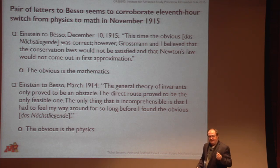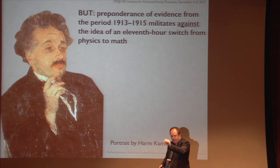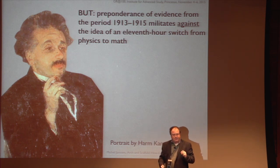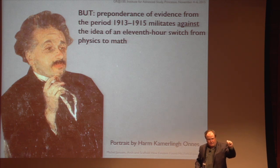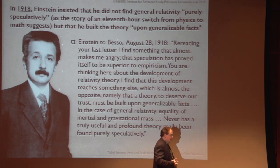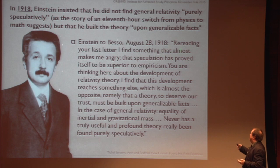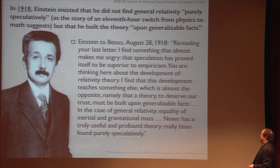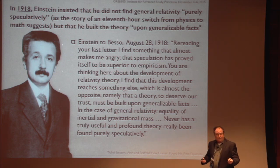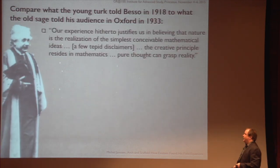If you look at the preponderance of the evidence — not just cherry-picking a few quotes — you see that in fact there is no such switch from math to physics. Einstein just doggedly followed the physical line of thought and was led back, doing that, to something that connected up very nicely with the mathematics. To show you how confusing it is to just look at some of these quotes: here is Einstein talking to Besso again a little bit later in 1918, saying: 'Re-reading your last letter, I find something that almost makes me angry. The speculation has proved itself to be superior to empiricism — you're thinking here about the development of relativity theory. I find that this development teaches something almost the opposite: a theory to deserve our trust must be built upon generalizable facts. In the case of general relativity, the equality of inertial and gravitational mass. Never has a truly useful and profound theory really been found purely speculatively.' Which is the exact opposite of what he told his audience in Oxford.